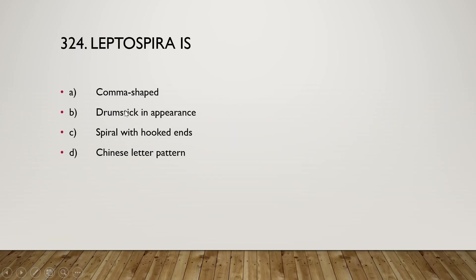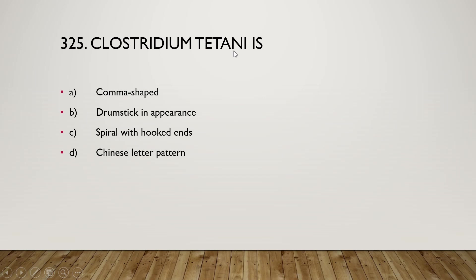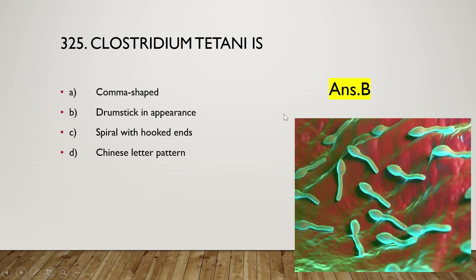Leptospira is comma-shaped, drumstick in appearance, spiral with hooked ends, or Chinese letter pattern. The right answer is option C — Leptospira are spiral with hooked ends. Clostridium tetani is comma-shaped, drumstick in appearance, spiral with hooked ends, or Chinese letter pattern. The right answer is option B — drumstick-like appearance. These are all the questions and answers for general microbiology. Thank you for watching.